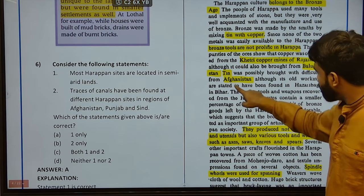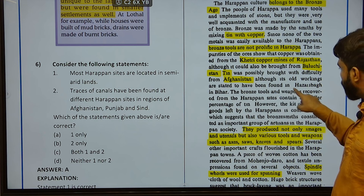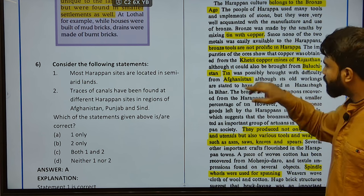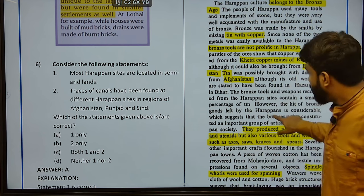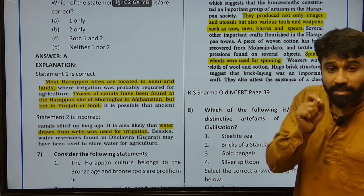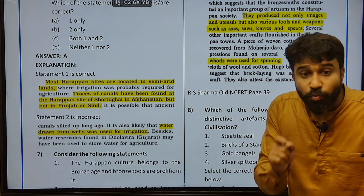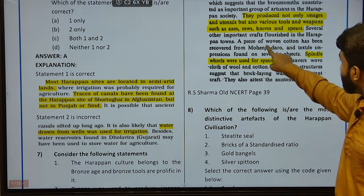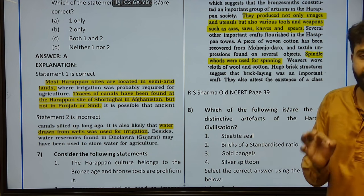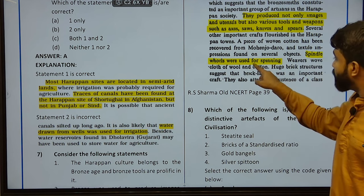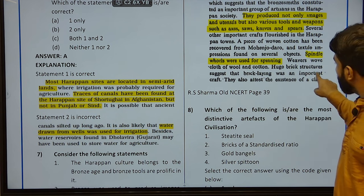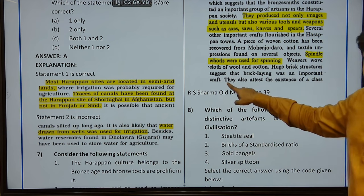Tin was probably brought from Afghanistan, although old workings are stated to have been found in Hazaribagh in Bihar as well — and copper from Khetri in Rajasthan and tin also from parts of Baluchistan. They produced not only images and utensils but various tools as well. They also produced cotton and wool — very important. A piece of woven cotton has been recovered from Mohenjodaro, and textile impressions found on several objects. Spindle whorls were used for spinning. Huge brick structure suggests that brick laying was an important craft at the time.